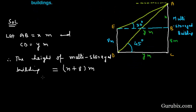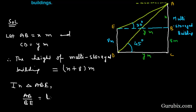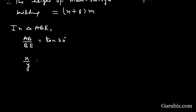Now we shall work in triangle ABE. We shall find the ratio of AB over BE, which is perpendicular over base, and the angle is 30 degrees. So tan(30°) equals x over y, and tan(30°) is 1 over root 3. Therefore y equals root 3 times x. This is our equation number 1.